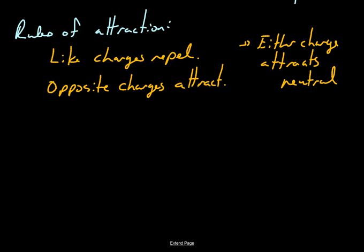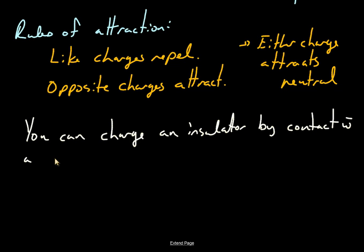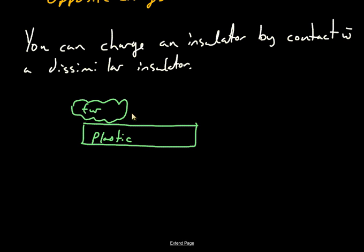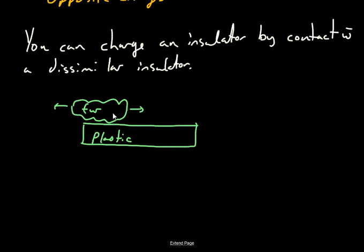You can charge an insulator by contact with a dissimilar insulator. Basically, the concept here - we just did a demo with plastic ruler and some fur. By rubbing the plastic with fur, in this case, we are pretty sure that the flow of electrons is this way.